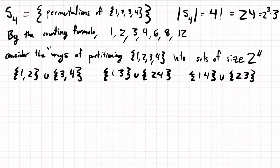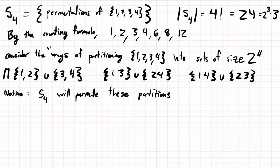And then the thing we'll notice: S4 will permute these partitions. So why don't we give them names? We can call this capital π1, we can call this capital π2, and we can call this capital π3.